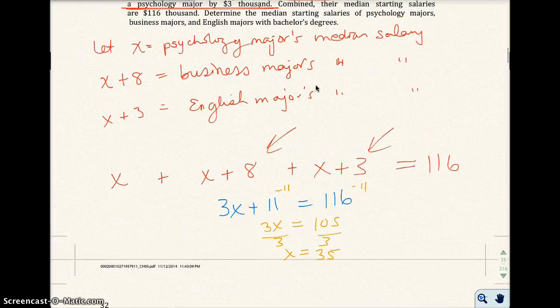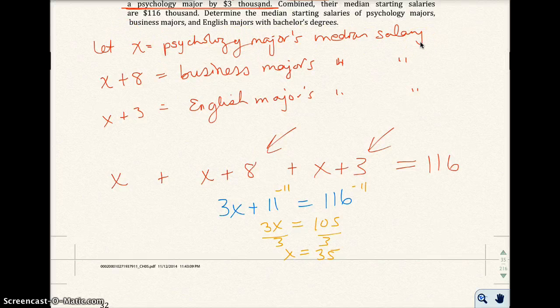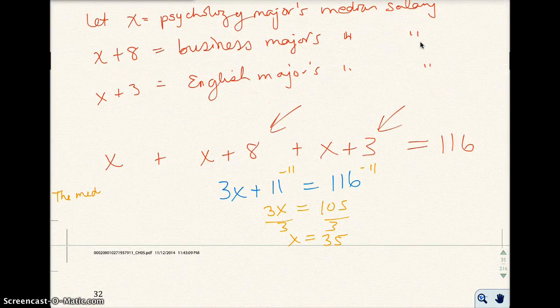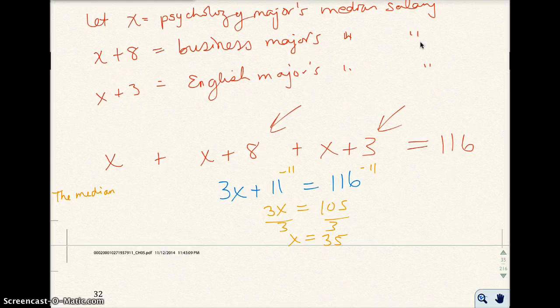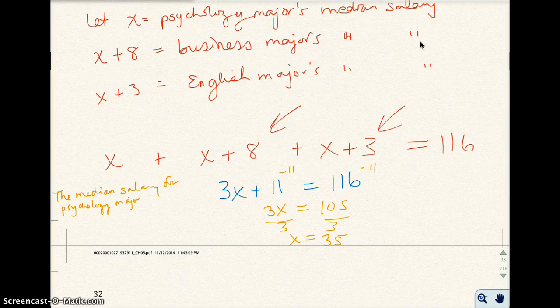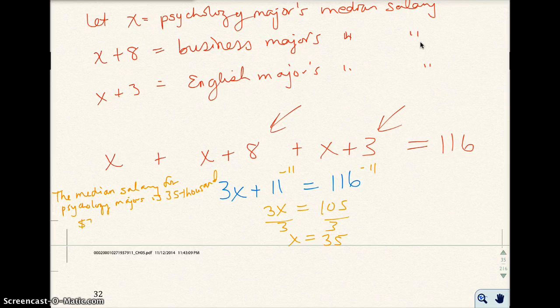So x equals 35. The psychology major's median salary is 35, and now we know it's thousands. So I'll write in the sentence. The median salary for psychology majors is 35,000. You could do 35,000 like this or this way. I'll go ahead and do it in terms of the dollar value there.